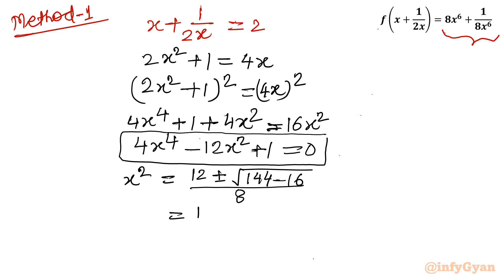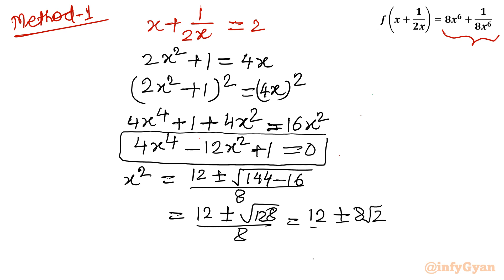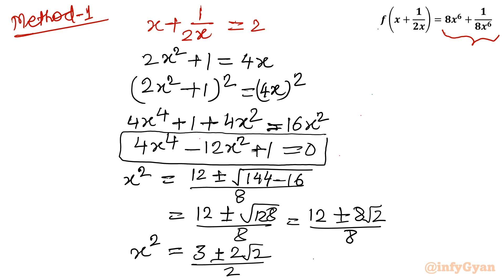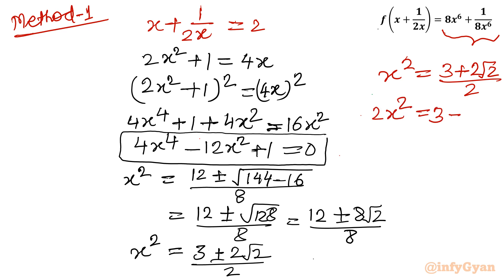Simplifying: x² = (12 ± √128) / 8. Since 128 = 64 × 2, we get √128 = 8√2, so x² = (12 ± 8√2) / 8. Dividing numerator and denominator by 4 gives x² = (3 ± 2√2) / 2. Taking the plus sign, multiplying both sides by 2 gives 2x² = 3 + 2√2.